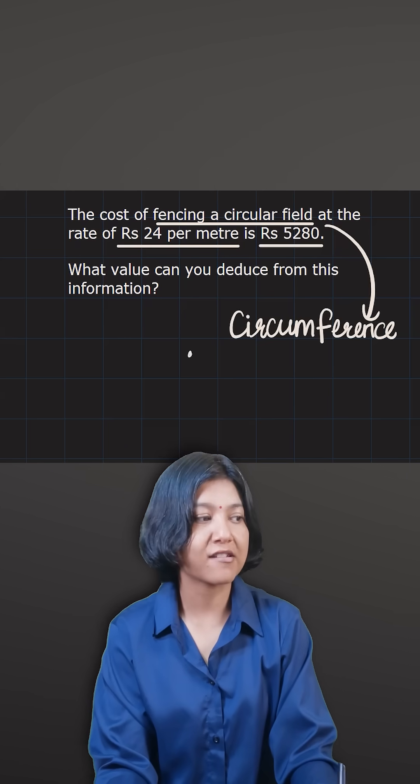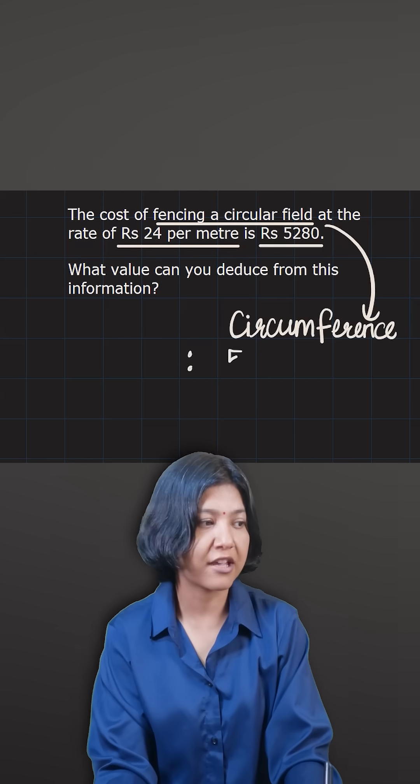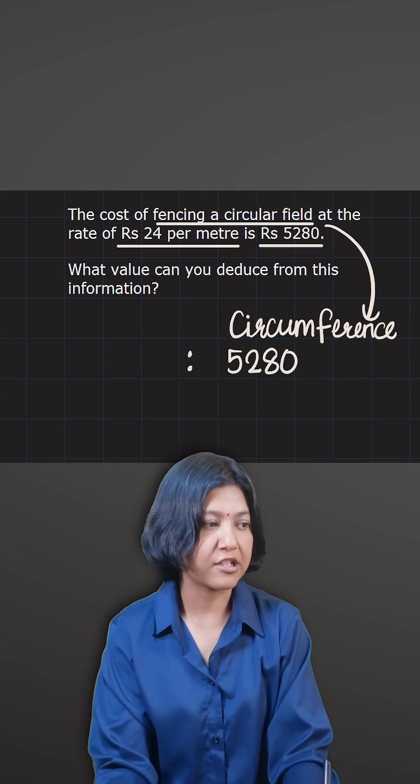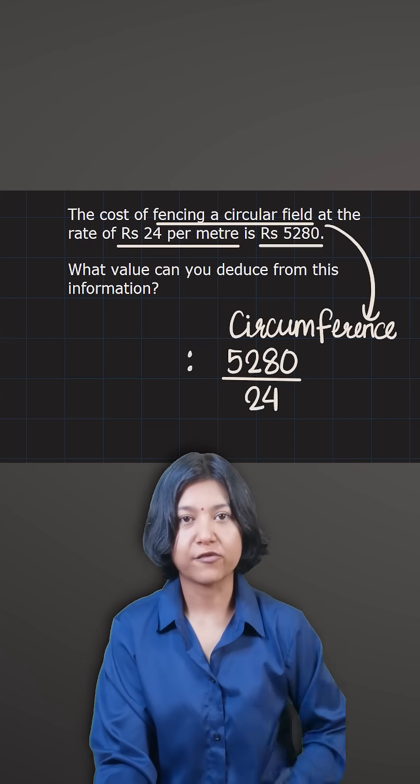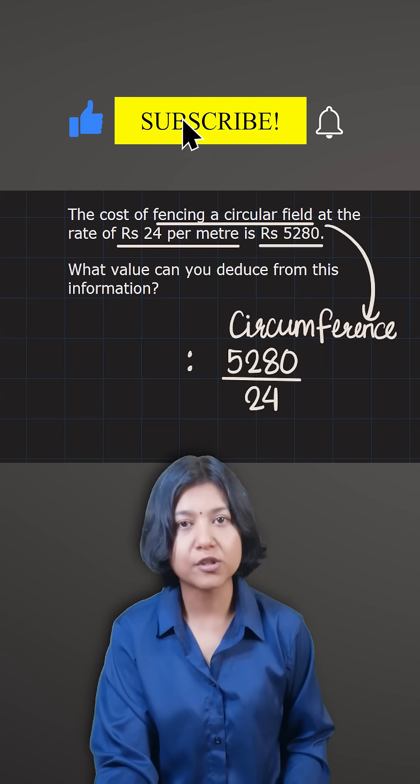So in order to find the circumference here, what we really can do is we have the two prices: the total price which is 5280 and the price per unit or price per meter, which is equal to 24 here.